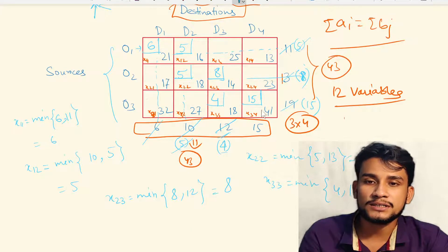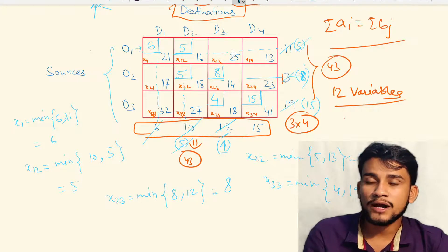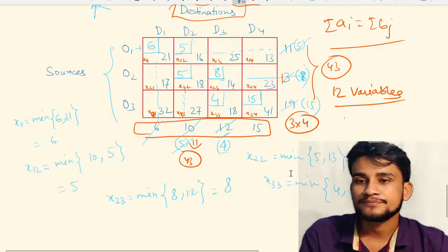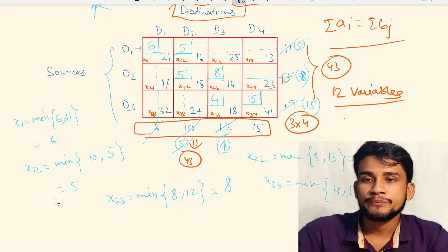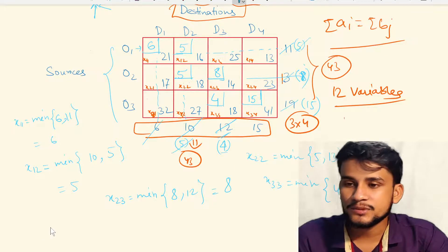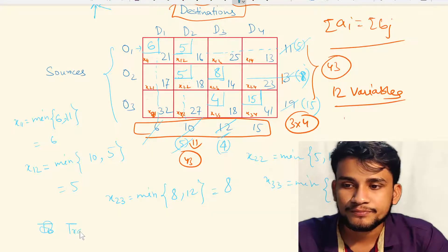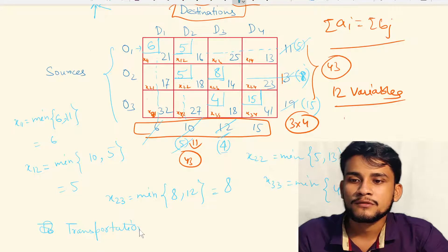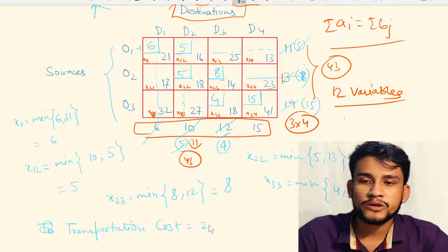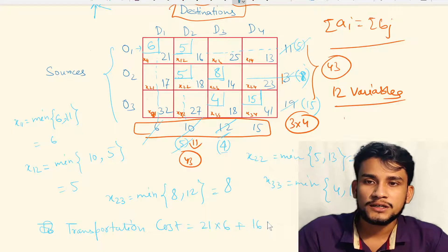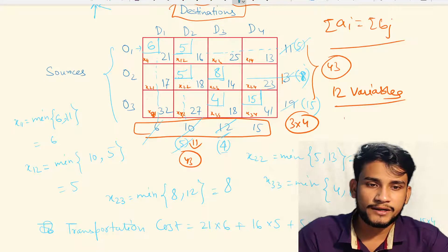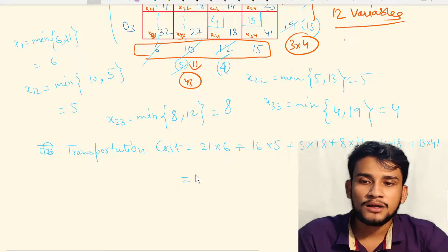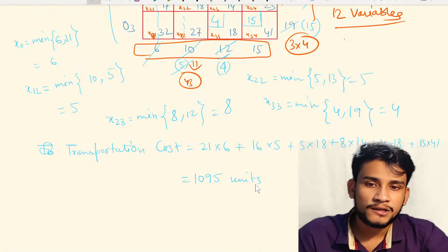This is the solution using the northwest corner method. We have allocations: x11=6, x12=5, x22=5, x23=8, x33=4, x34=15. The minimum transportation cost is: (21×6) + (16×5) + (5×18) + (8×14) + (4×18) + (15×41) = 1095 units.